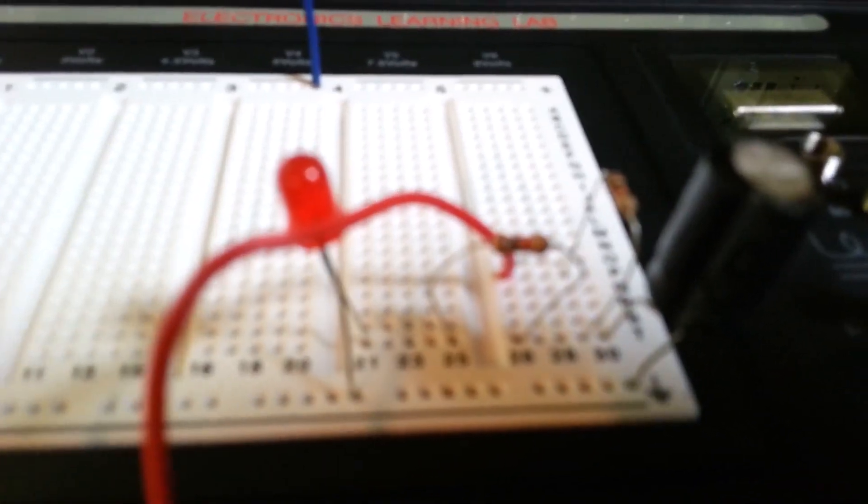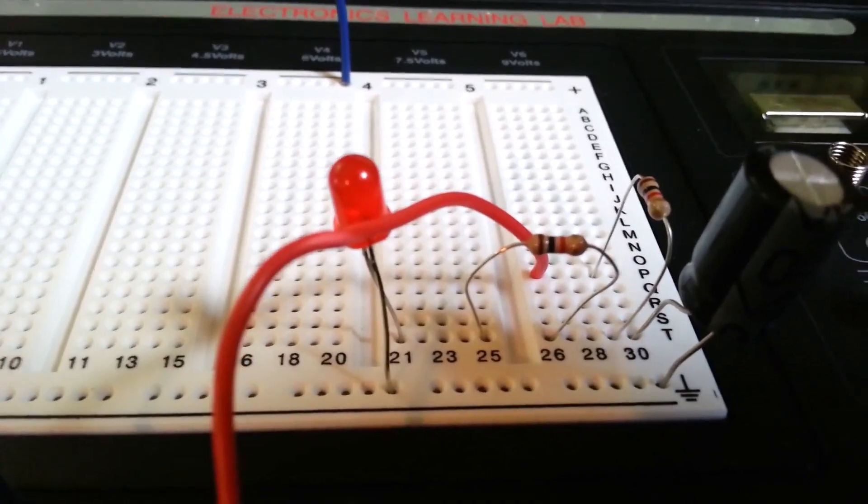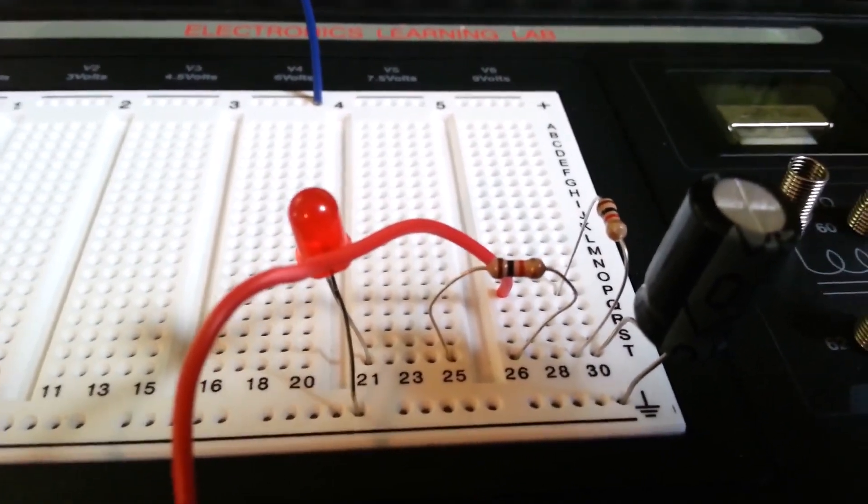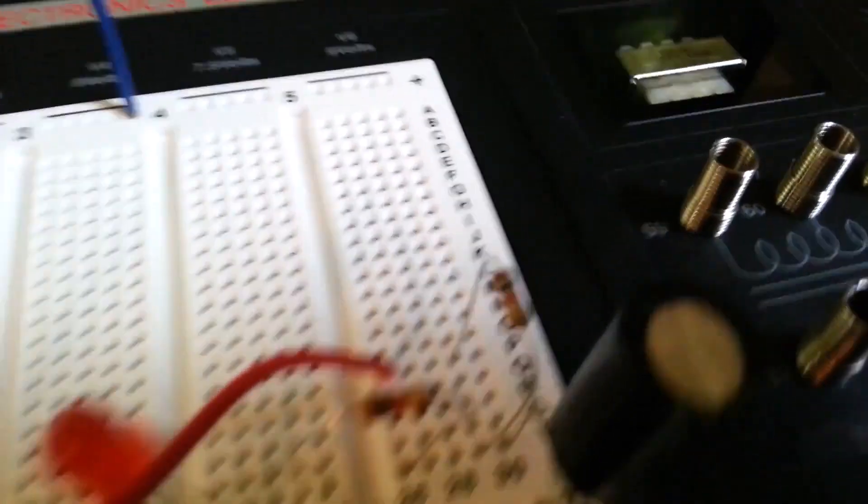So I've added a second resistor here. These are brown, black, red resistors. They're 1,000 ohms - brown, black, and red.